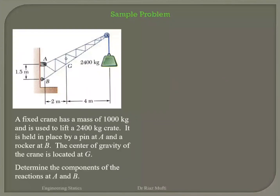We've got a fixed crane that has a mass of 1000 kg and is used to lift 2400 kg. The 2400 kg load is here and the mass of the crane is 1000 kg, so the force is being applied at G. It is held in place by a pin at A and a rocker at B. The center of gravity of the crane is located at G. Determine the components of the reactions at A and B.